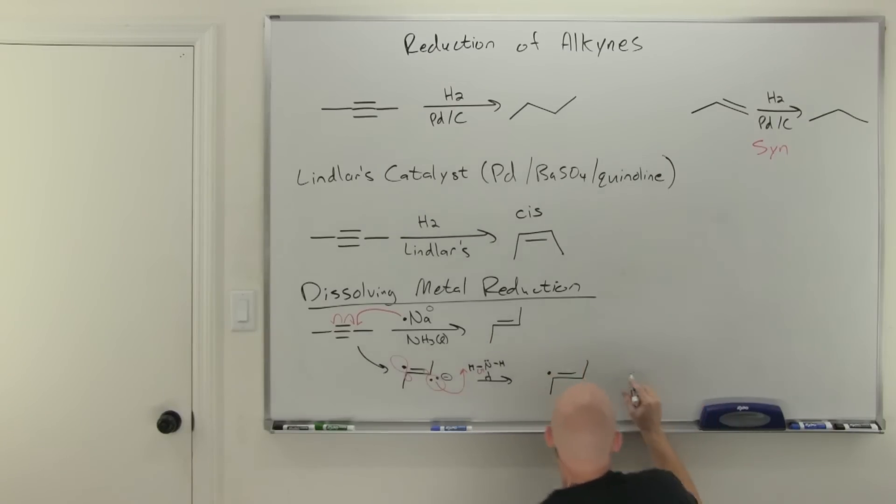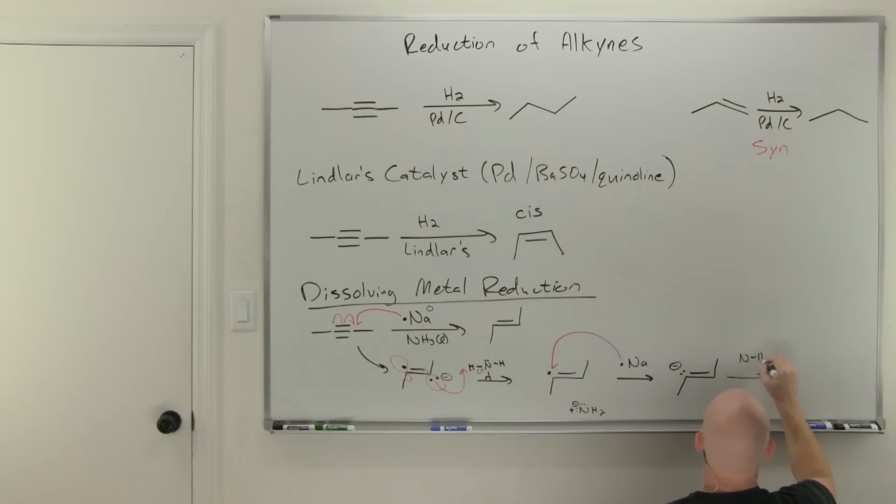We'll kind of repeat this sequence over again. We'll take another sodium atom and have it donate its electron now to the other carbon so that we get a lone pair there and make him the anion. Then he'll go get protonated from another ammonia molecule and we'll form another amide ion in the end.